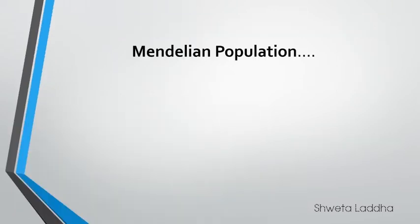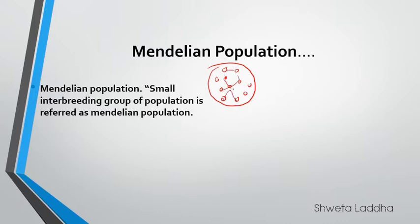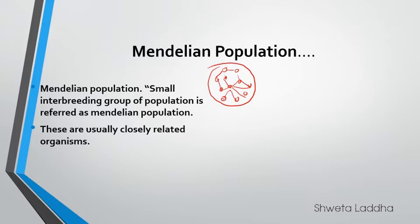First, let us understand what is a Mendelian population. A Mendelian population is a small interbreeding group of organisms staying together at a time in a specific area. These organisms can interbreed among themselves. They are usually closely related, morphologically similar, and have an equal chance of mating with each other.